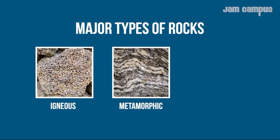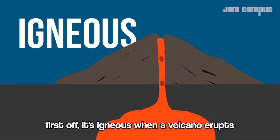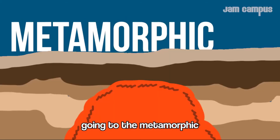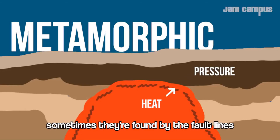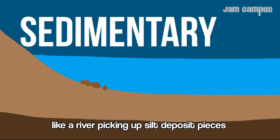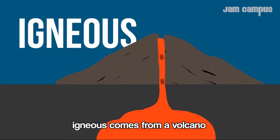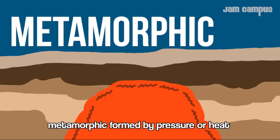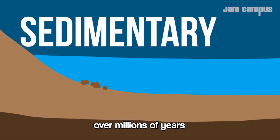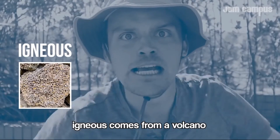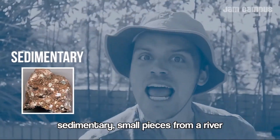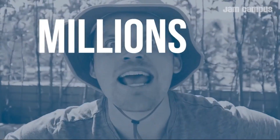There are three major types of rocks: igneous, metamorphic, and sedimentary. Igneous forms when a volcano erupts, moves magma, and then it cools down and hardens within the earth's crust. Metamorphic forms by massive heat or pressure — sometimes found by fault lines where plates push against each other. Sedimentary rocks form from sediment combining, like a river picking up deposited pieces that eventually become rock. Igneous comes from a volcano. Metamorphic forms by pressure or heat. Sedimentary — small pieces from a river over millions of years.